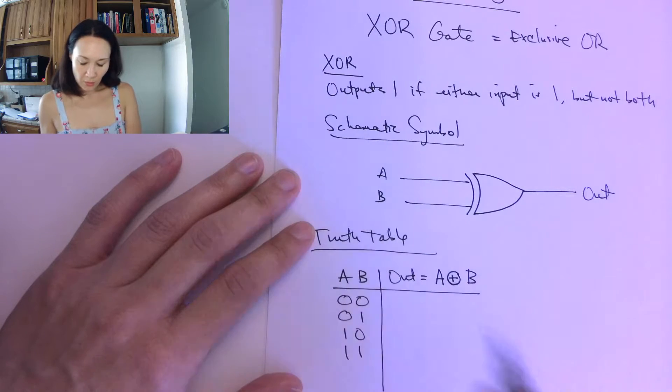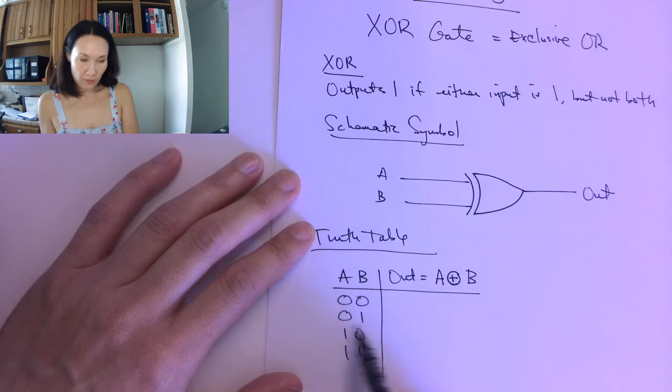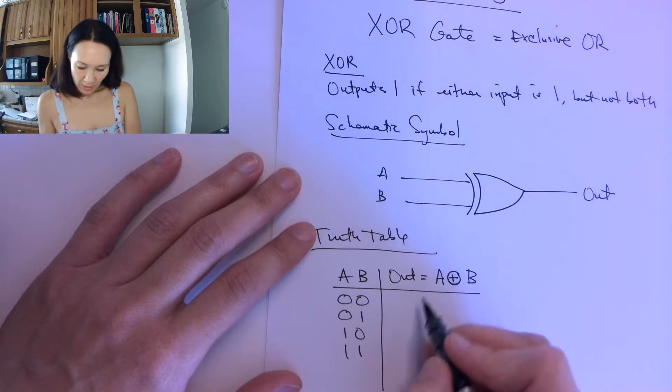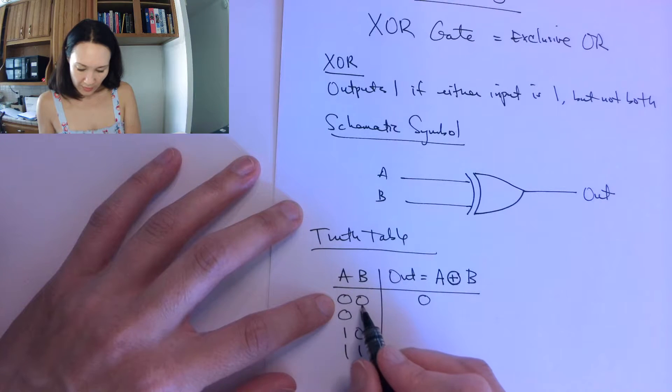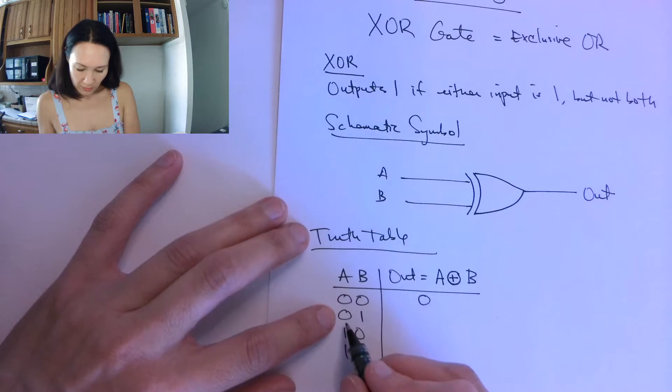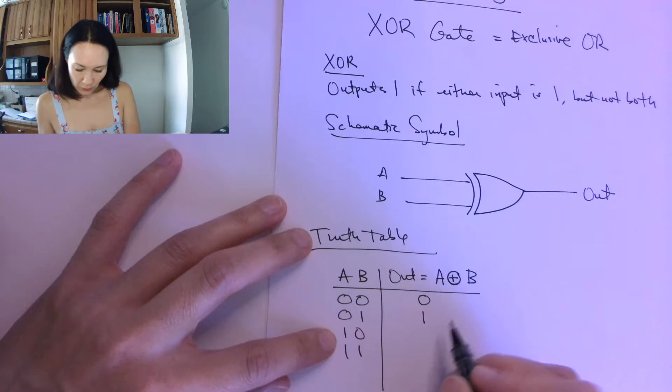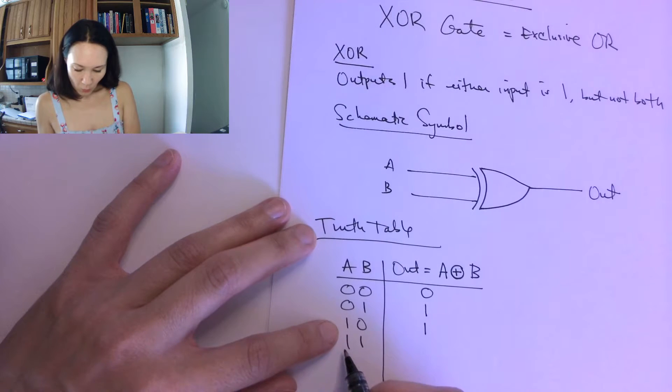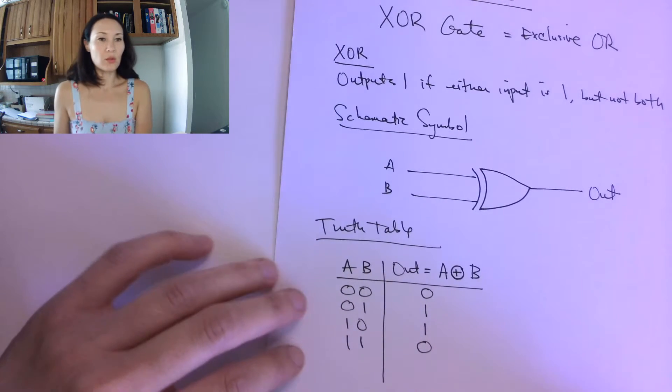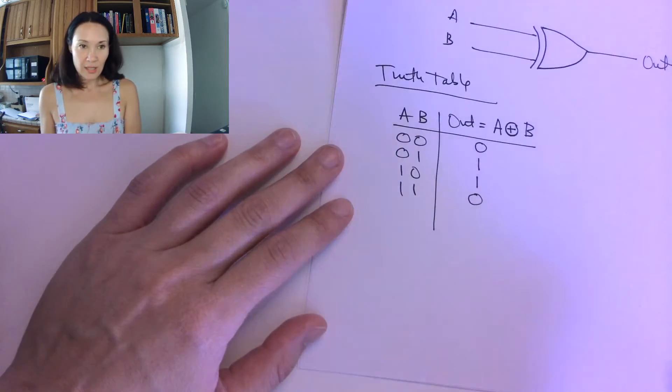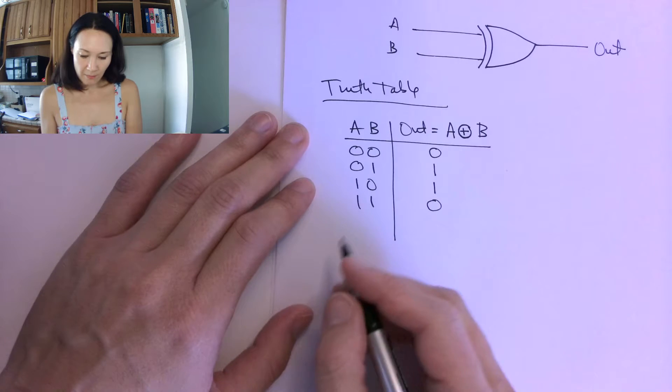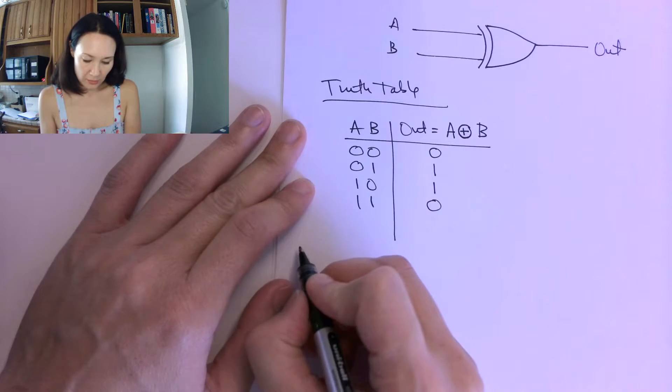And this is only going to be true if one of them is true, but not both. So this is false, which is 0 XOR 0 is 0, 0 XOR 1 is 1, 1 XOR 0 is 1, but 1 XOR 1 is 0. So here's the truth table for the XOR gate. Let's look at an example of an XOR in a circuit.